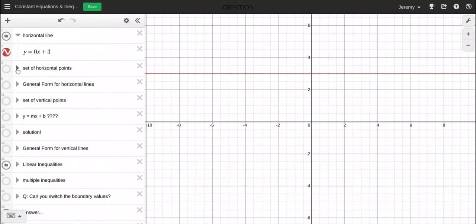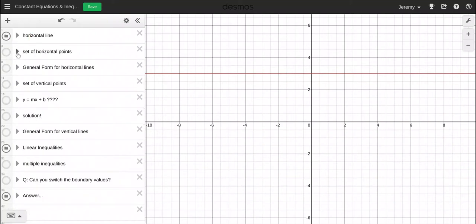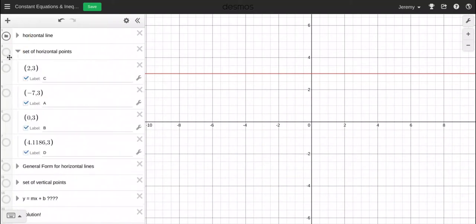And if we open this set of points and turn those on, we have a bunch of points there: 2 comma 3, negative 7 comma 3, and so on. Notice all these points have a y coordinate of 3, which is why they're all points on this horizontal line.